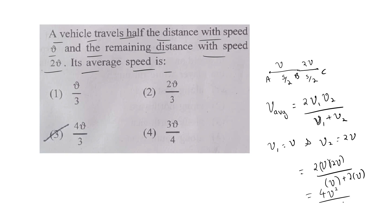4V squared by 3V. V and V get cancelled, so it will be 4/3V. 4/3V is the right answer to this question. See you in the next question.